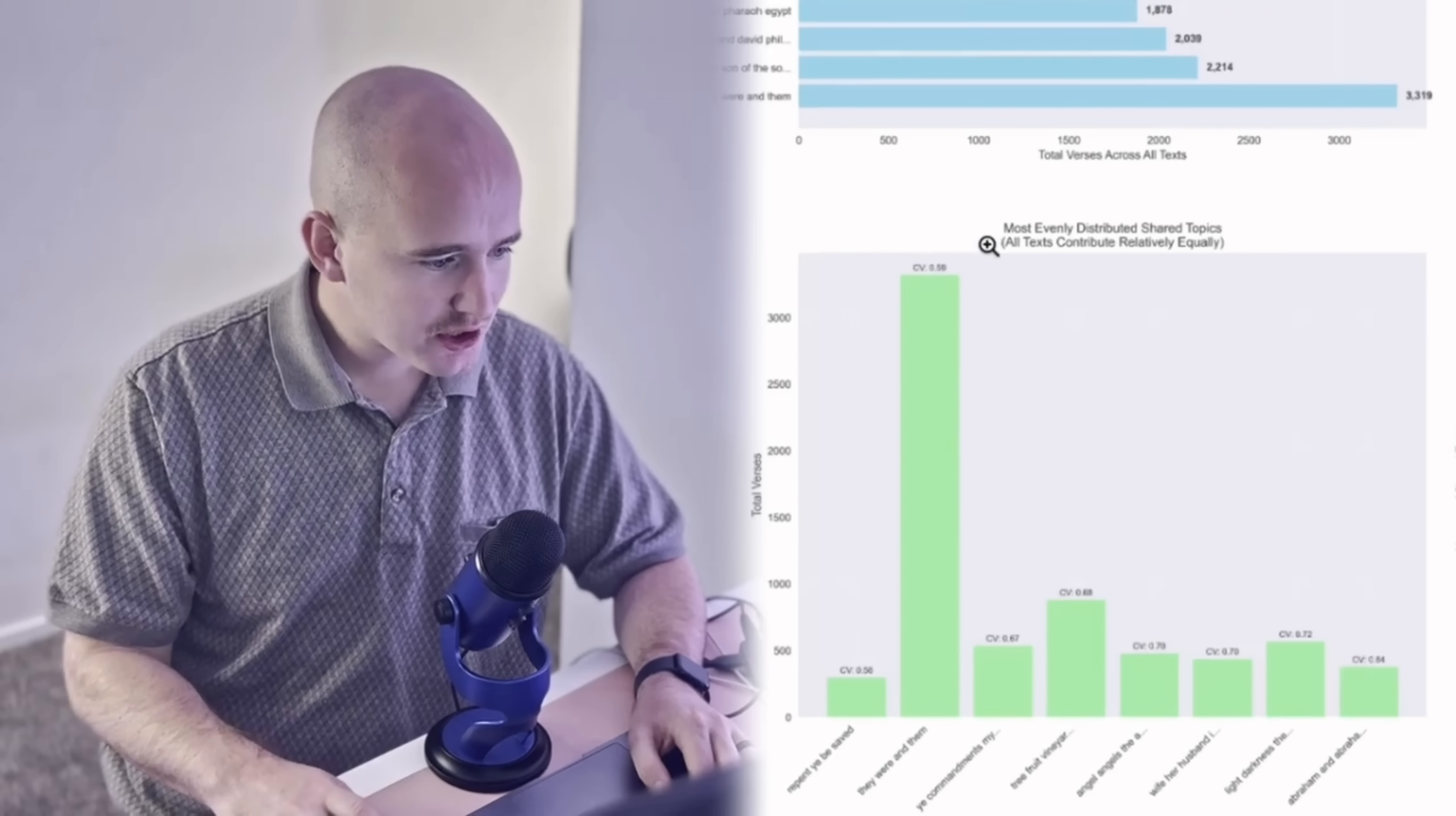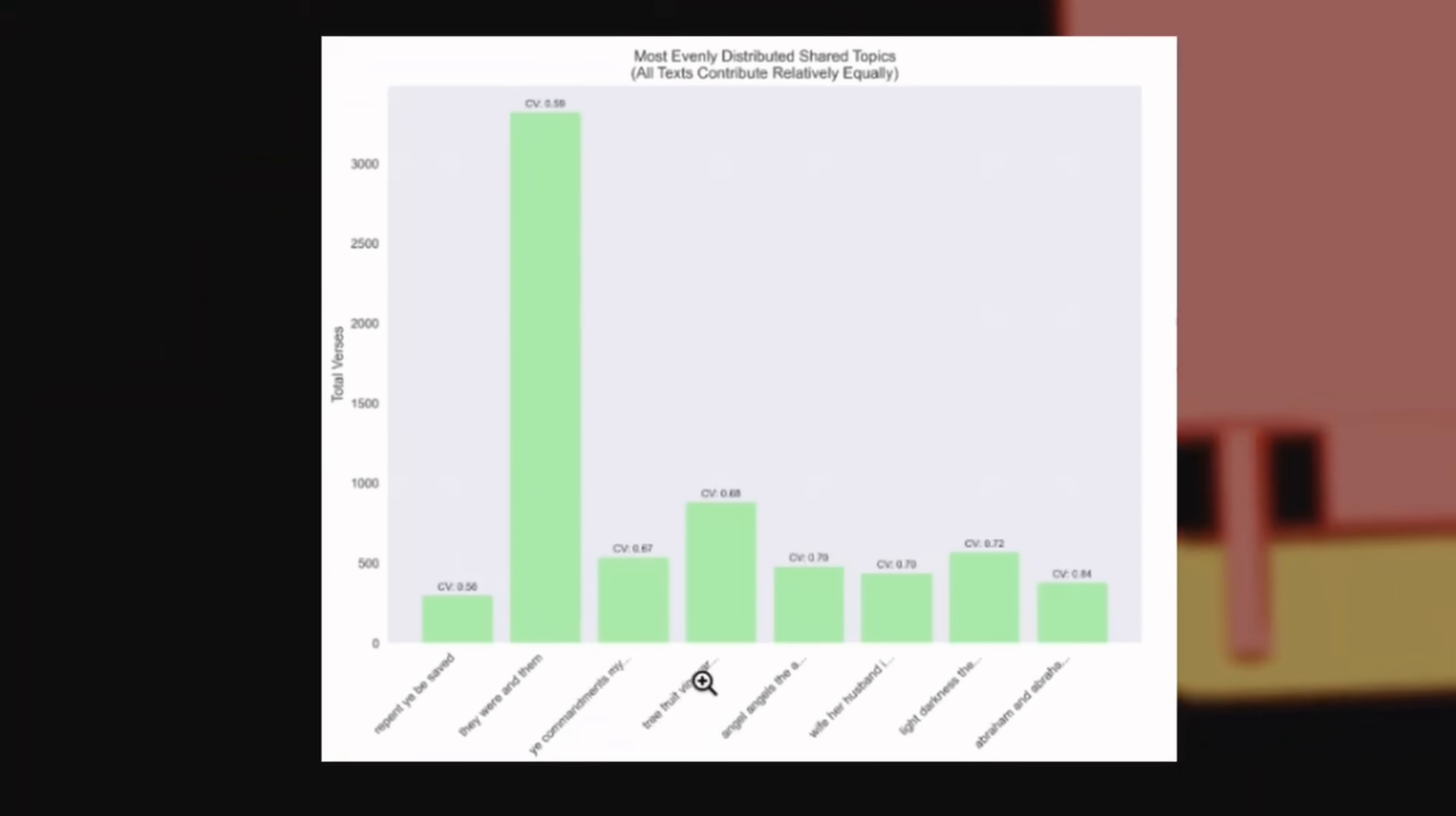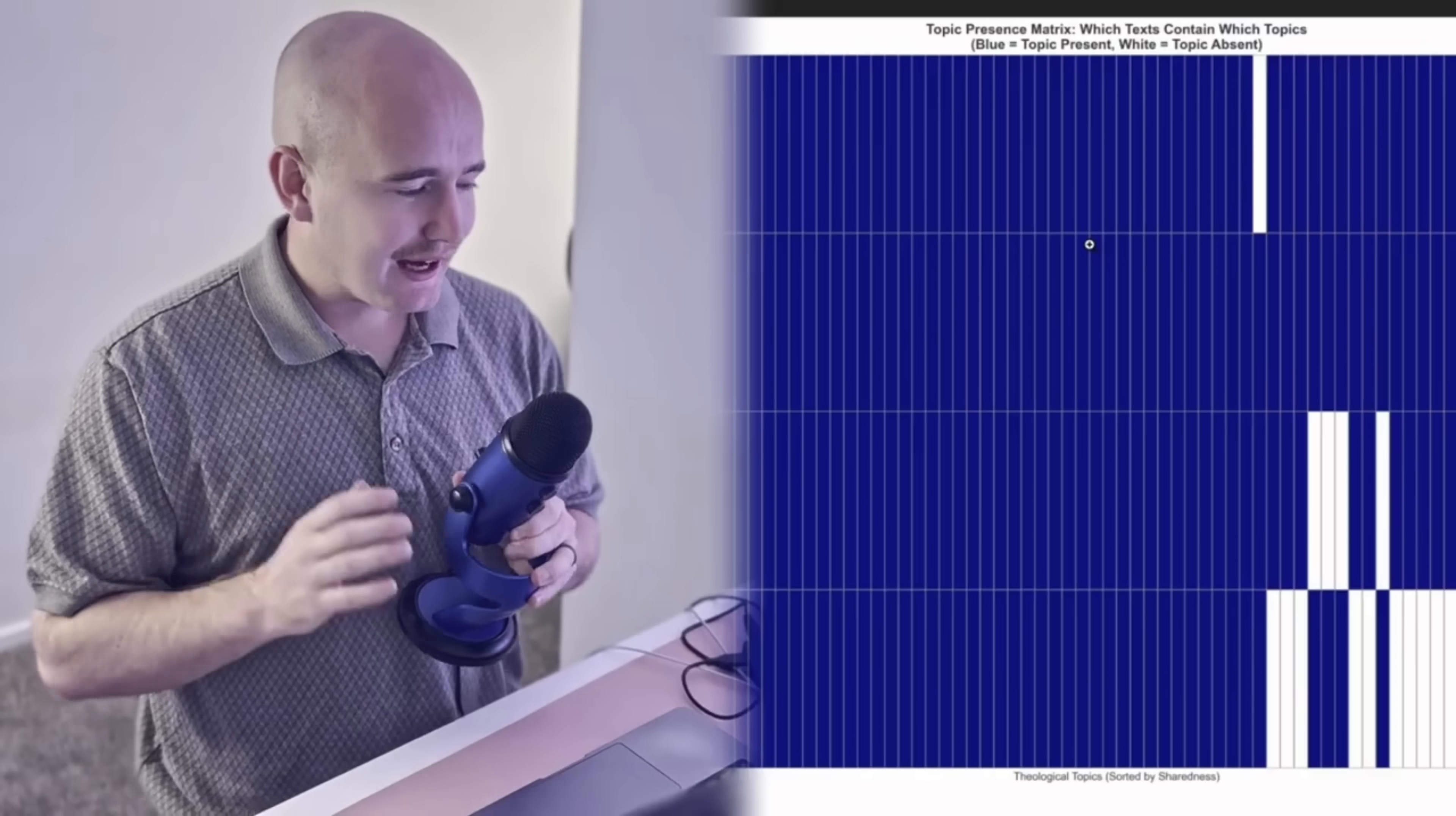Now if we look at this graph down here, this shows the most evenly distributed shared topics. Some of the topics that are shared across all the different texts are the message of repent ye and be saved. That's pretty cool. My commandments, so keep my commandments is another shared topic. Topics around tree, fruit, and vineyards. Another one is around angels. Another one about marriage, wife, her husband, and that type of thing. The distinction between light and darkness. And the discussion of Abraham is present in all of the texts.